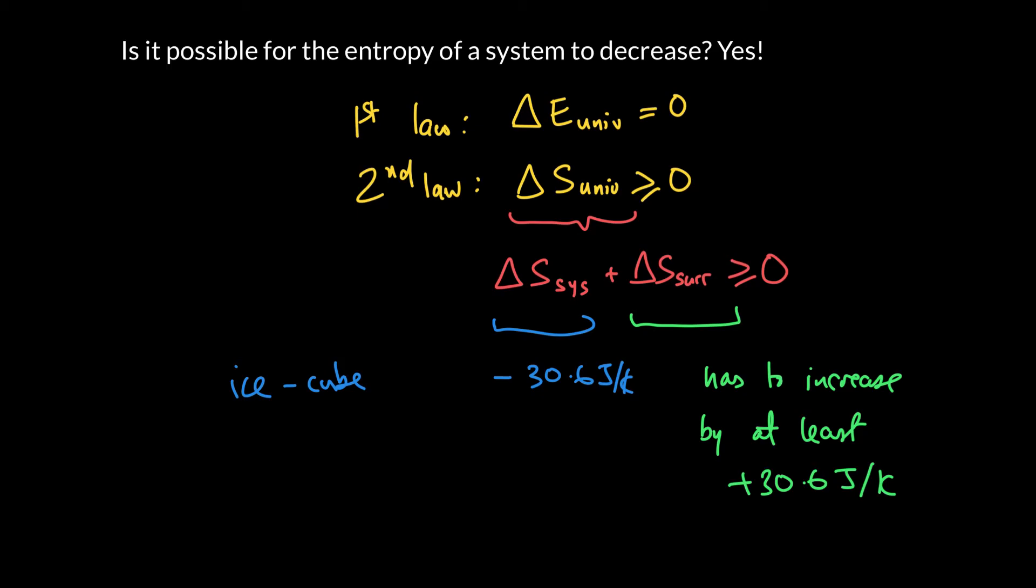So it tells us now that in order to see if something can happen, we're going to have to find a way to calculate the whole entropy change, not just the system itself, and then compare it to this equation.